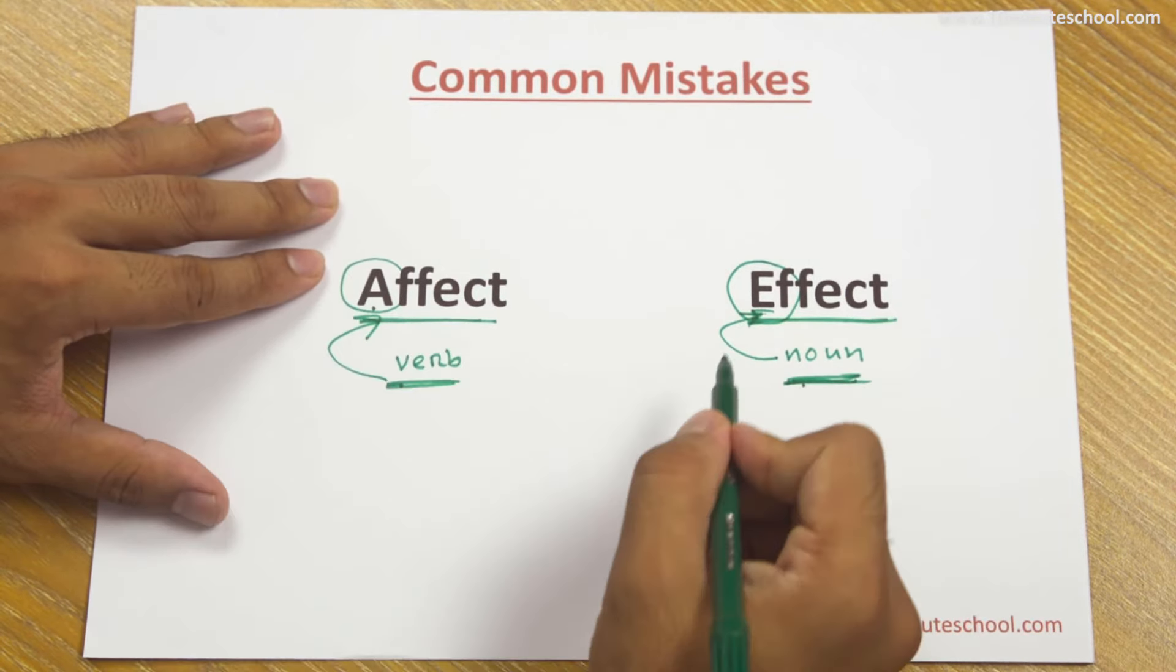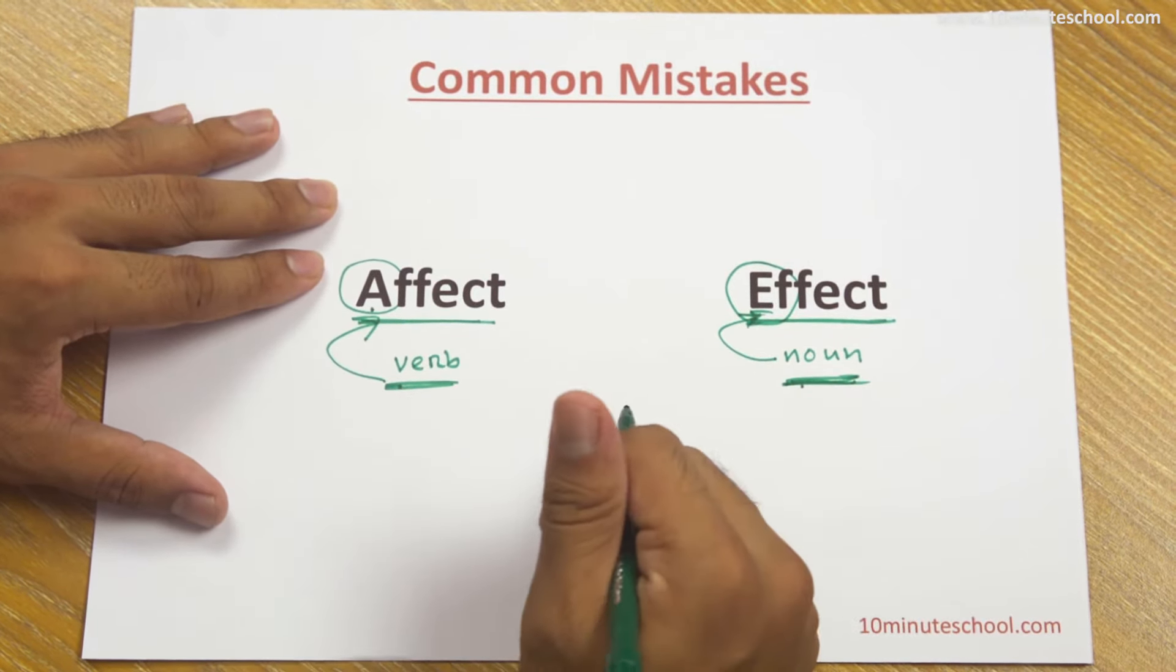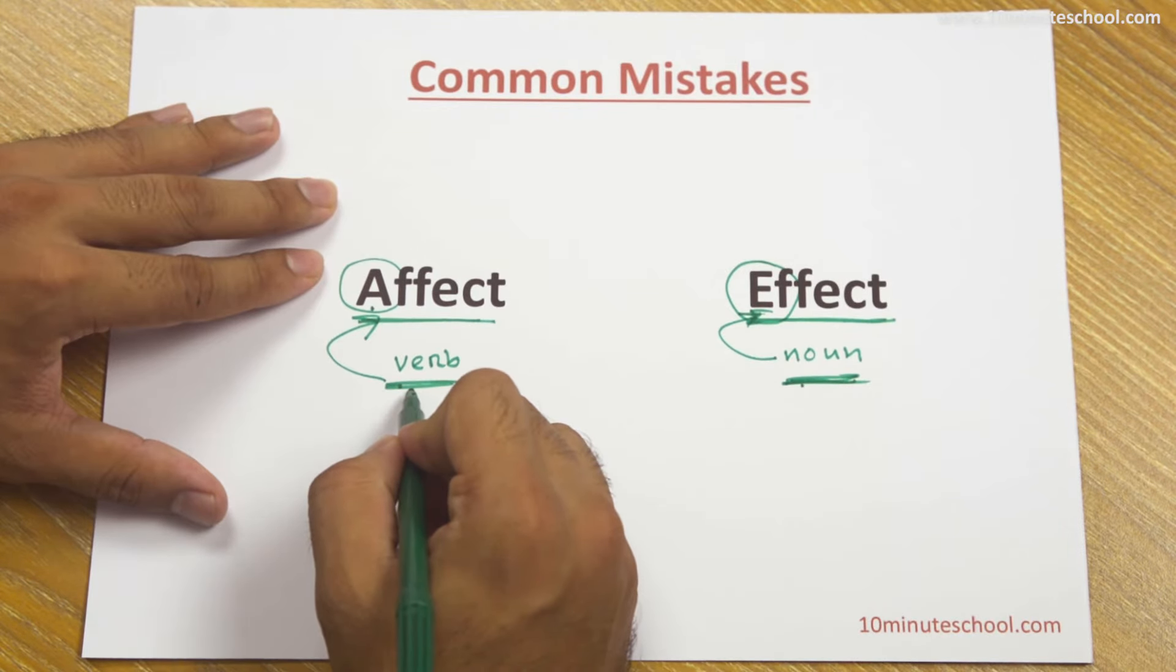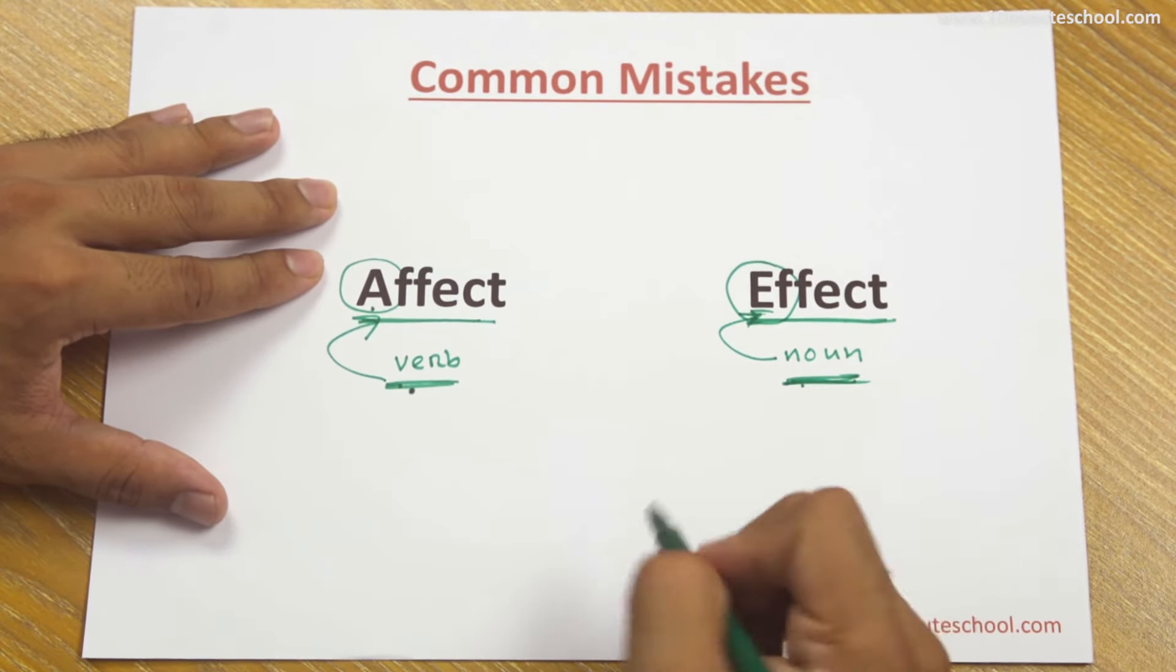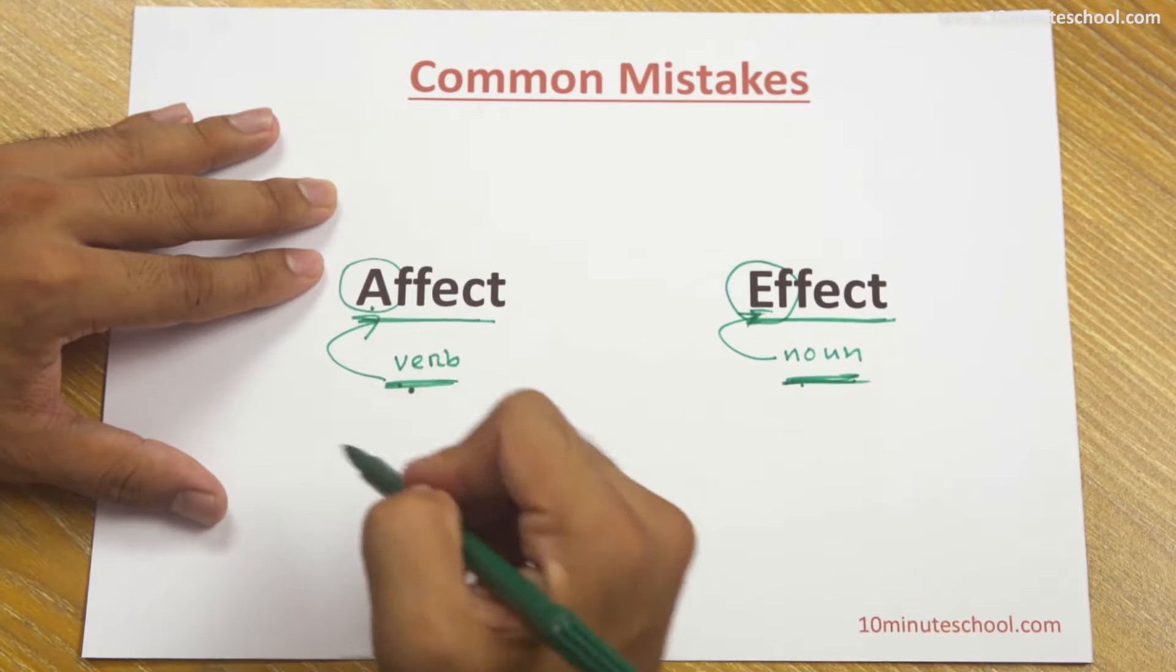So remember, affect with 'a' for verb, and effect with 'e' for noun.